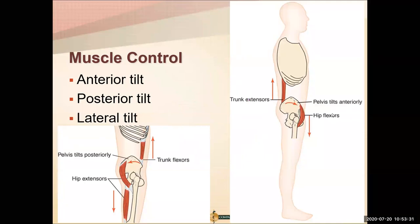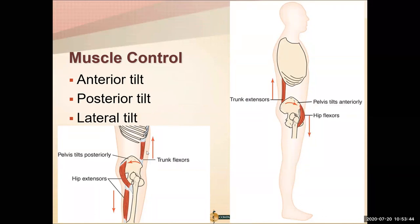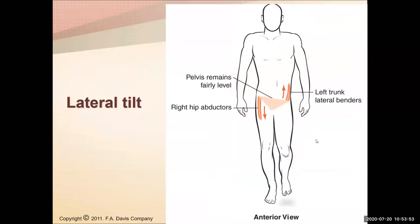The diamond diagram shows muscles working in opposition. To go into anterior tilt, the hip flexors pull the ASIS down and the trunk extensors pull the PSIS up. In posterior tilt, the trunk flexors pull up and the hip extensors pull down. For lateral tilt, the same muscle opposition applies side to side.